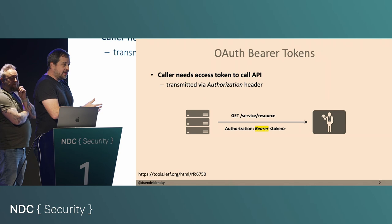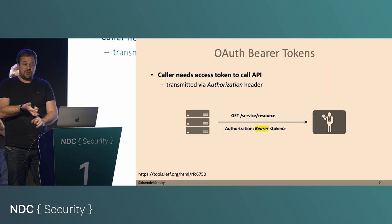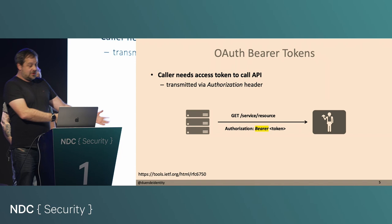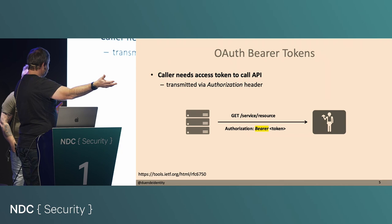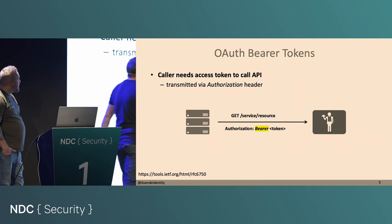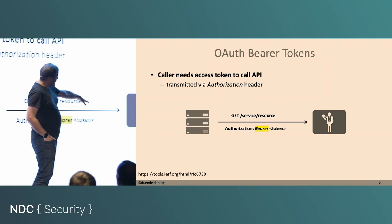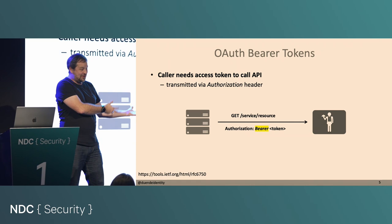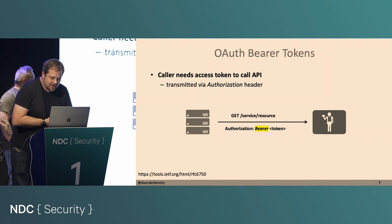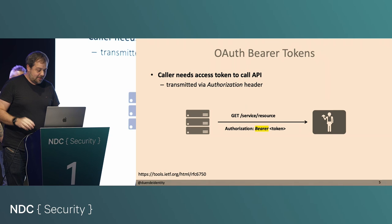Bearer tokens assume the authorization server doesn't leak the token, the client doesn't leak the token, and the transport is perfectly secure from eavesdropping and man-in-the-middle attacks. You're not leaking tokens into log files or URLs, because anyone who could access that could take the token and call the API and impersonate the client. Or what about the API itself? The API could take the token, turn around, and call another API using that token — because all it needs is being the bearer of the token. That's where the name comes from. And that seems a little bit risky.